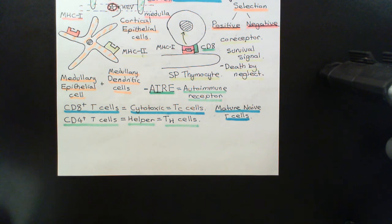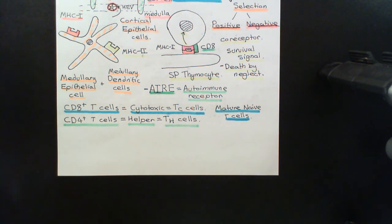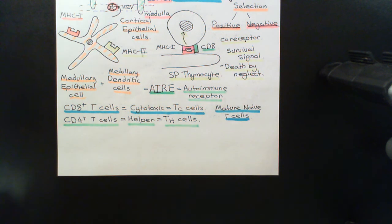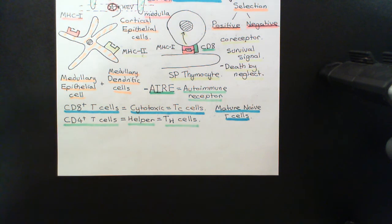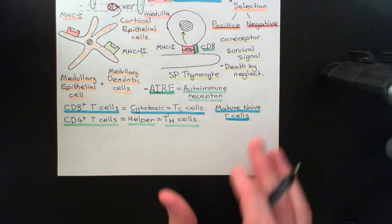What happens to the mature, naive T-cells next? They've gone into the bloodstream from the thymus gland through the high endothelial venules. Where are they going to go next? What happens is they continuously move around in the body — they do not just go to one site and sit there forevermore. They circulate: they go into a lymph node, then move via the lymphatic system to another lymph node, and eventually drain through the lymphatic system back into the bloodstream, and from the bloodstream they'll go to a different lymph node. So they're continually circulating between the circulatory system and the lymphatic system.